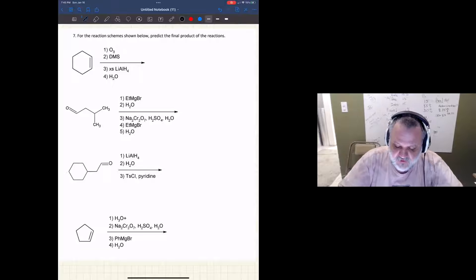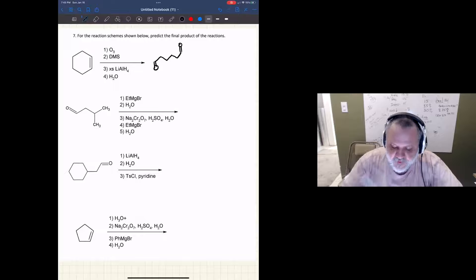This first one has got six carbons, and we're going to do some ozonolysis with an alkene, which means we'll end up with one, two, three, four, five, six. We'll end up with some carbonyl groups on either side of a straight chain. It's going to break the double bond.